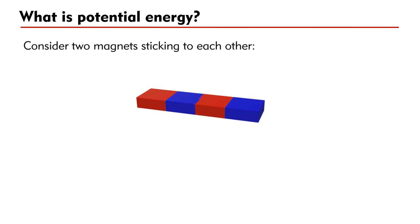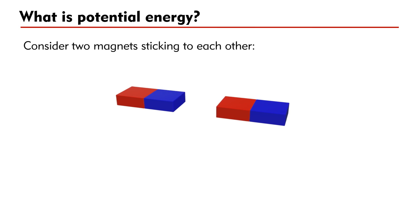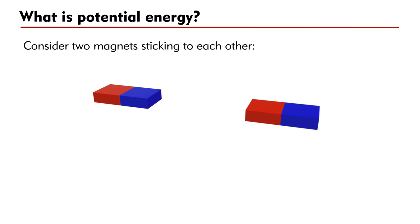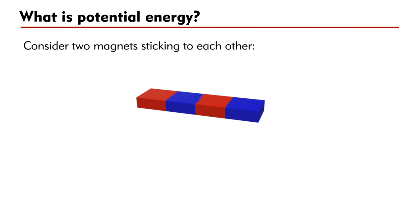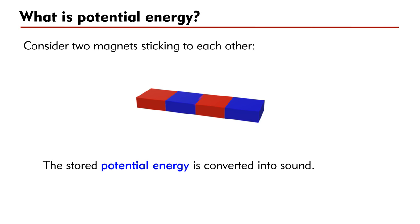What is potential energy? If you have two magnets sticking to each other, you need energy to separate them. The energy supplied to the magnets is called potential energy. After separation, when the magnets are released, they will hit each other, producing a sound. The stored potential energy is converted into sound.